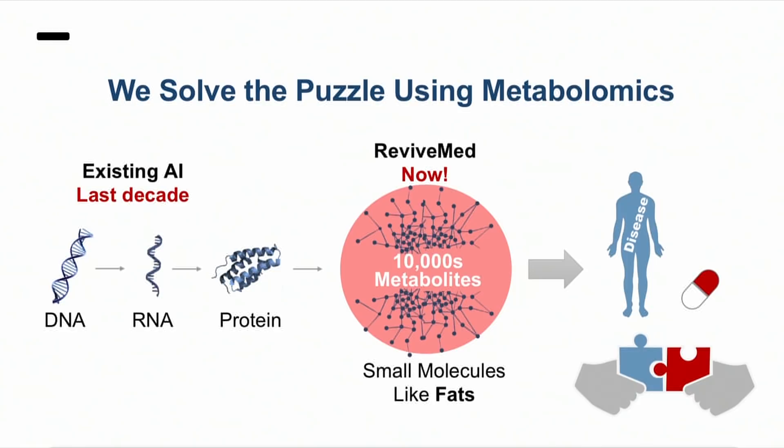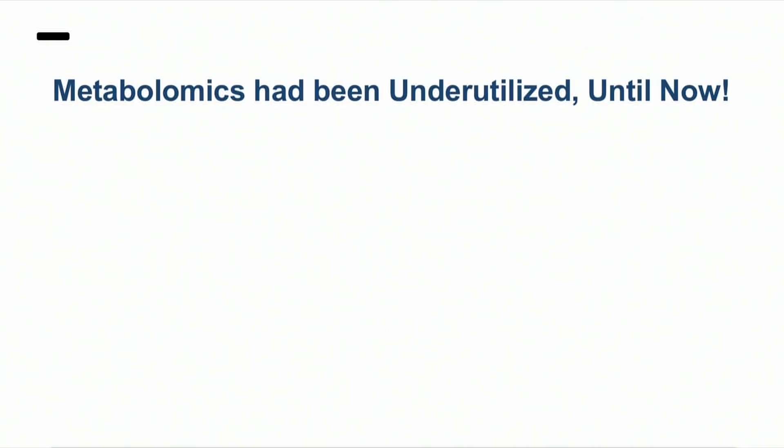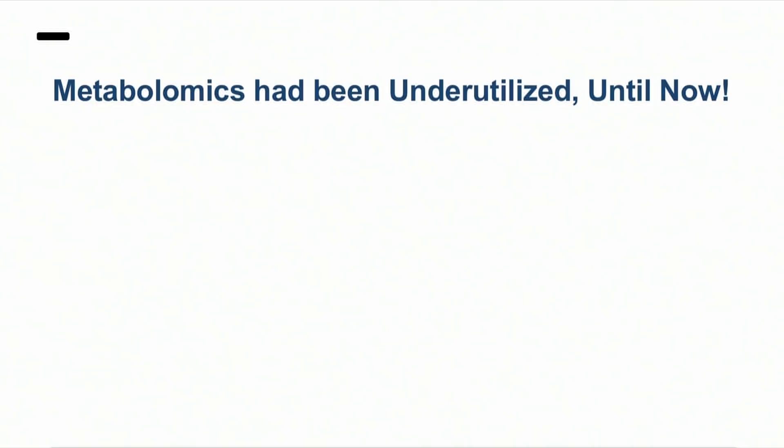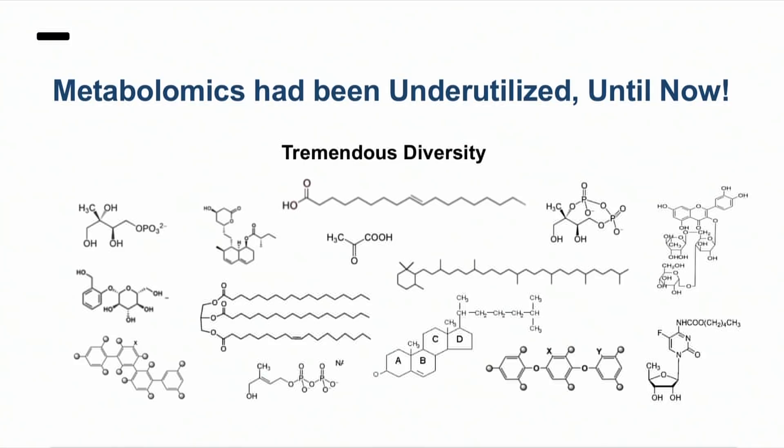Now, at ReviveMed, we are able to use metabolomics to solve this puzzle. Until now, metabolomics has been underutilized because metabolites have tremendous diversity in their structures. Each one of them is different from the other, so it requires several customized processes to identify them in the human body. That's why current platforms are only focused on characterizing a small number — less than 5% of them.